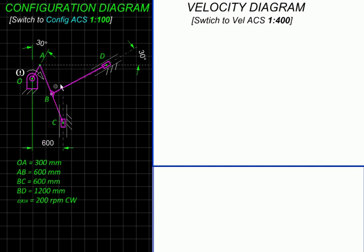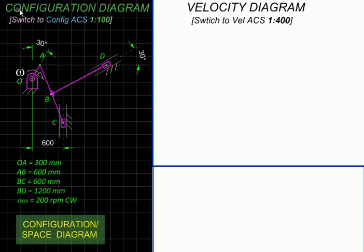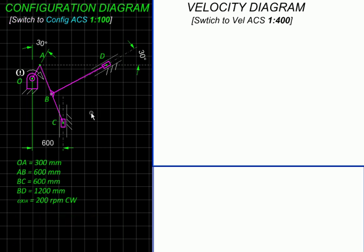This diagram is called the configuration or space diagram. It represents a certain configuration position of this mechanism. Next, we will start with the velocity diagram where we will be plotting the velocity images of all the points in the configuration diagram.